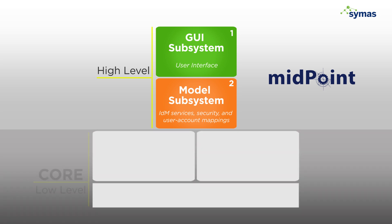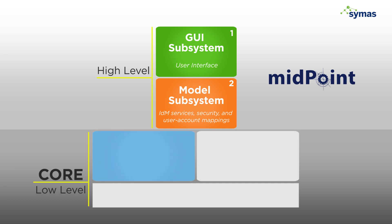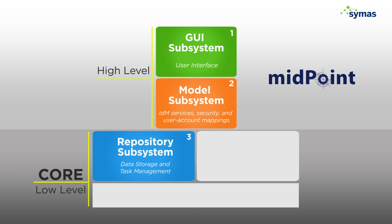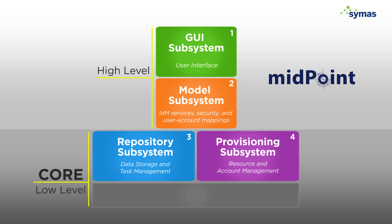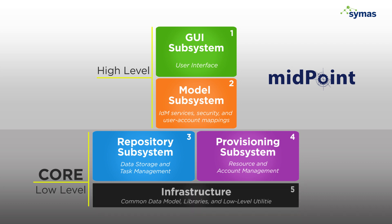These high-level components sit on top of the core, which contains the low-level components that are configurable. The core consists of the repository, where data storage and task management occur. There is also a provisioning subsystem, where resource and account management take place. Finally, at the bottom is infrastructure, where the common data model, libraries, and low-level utilities like logging and tracing reside.